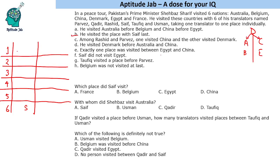Exactly one place was visited between Egypt and China, so there is a gap of one place between them. Saif did not visit Egypt. Belgium was not visited last. Denmark cannot be last because it is visited before all these places. Belgium is not last, and China cannot be last because it is before Belgium. Egypt cannot be last since Saif did not visit Egypt. So obviously, the last country visited will be France.